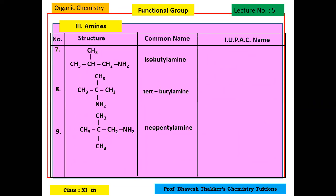Amit correct, Shreyansh correct, Purva very good, Priyanshi very nice. Farhan, you have to give numbering — ISO, SEC, N is common nomenclature. In IUPAC, we do numbering and select the longest chain. The longest chain is of 3 carbons. Methyl is on the second carbon and the amino group is on the first carbon. So the name is 2-methylpropan-1-amine.